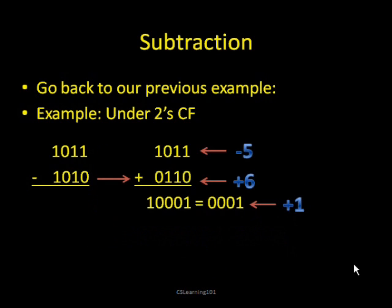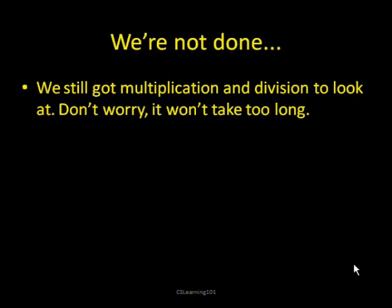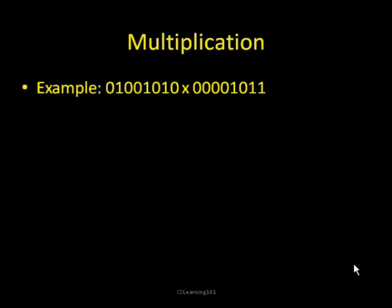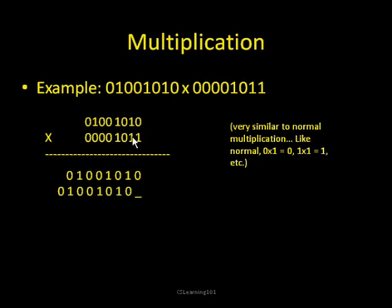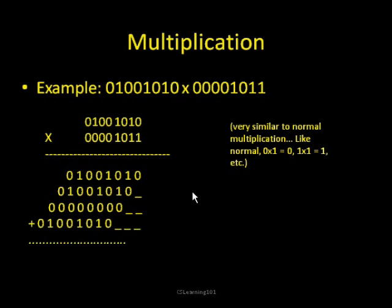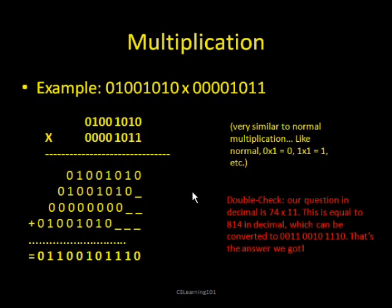We still have multiplication and division to look at — these are relatively simple. Multiplication is almost exactly the same as regular multiplication. Keep in mind that 0 times any number is always 0, and 1 times 1 is 1. Like regular multiplication, you take one value, multiply it with all the digits, write that out, move over one space, repeat with the next digit, move over a space again, and so on. Then you add up all the numbers. You can double-check by converting to decimal.